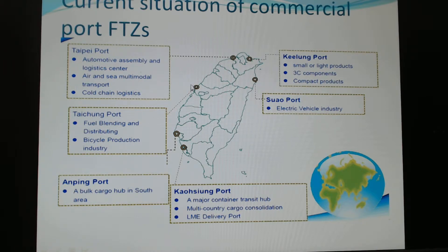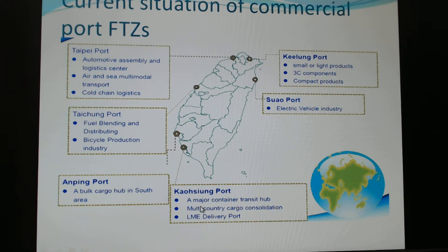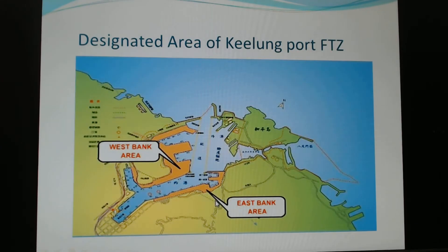Taichung is located in the central part of Taiwan. There is also Anping Port, led by Tainan. The Kaohsiung core focuses on major container transit hub functions, multi-country cargo consolidation, and last-mile delivery.